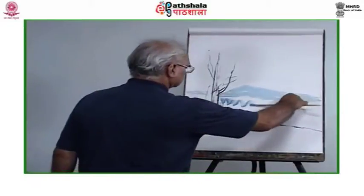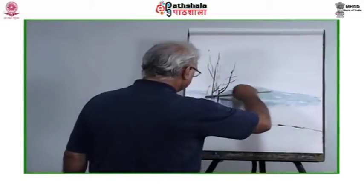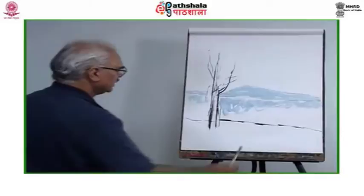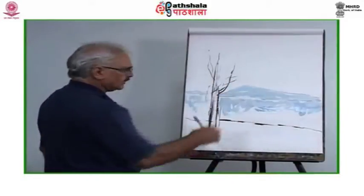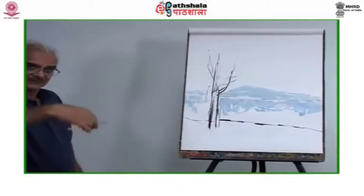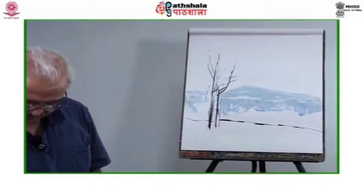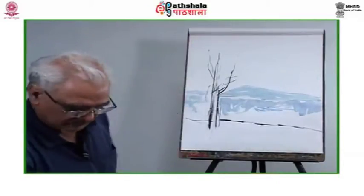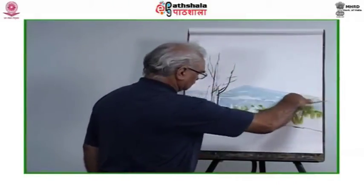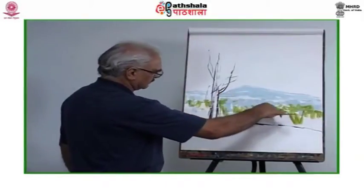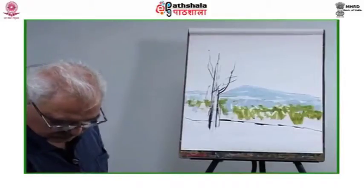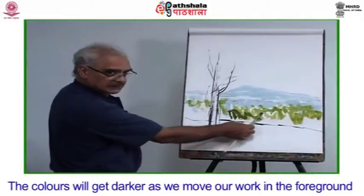Let's move further to know how we can create and maintain distance in a drawing through colors, tones, and lines. For making water and grass in the background, I will pick a tone of light blue-gray and light green — both cool and light colors. To use lines for creating distance, I will move my brush in vertical strokes to create a feeling of a water body in the distance, and similar strokes for the grass. A single application of a darker green over the light green will create a strong distance between the mountain range and grass. The colors will get darker as we move our work into the foreground.